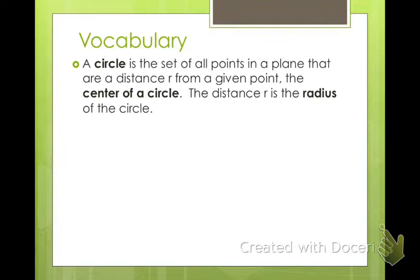Some vocabulary you should know: A circle is a set of all points in a plane that are at a distance r from the given point, the center of the circle. That distance from the center to any point on the circle, or that r, is called the radius of the circle. Hopefully you've learned that before now.